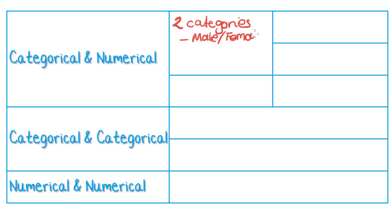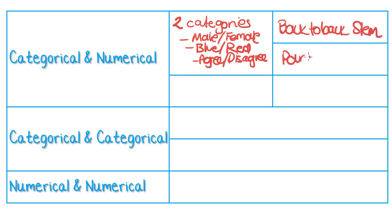Or blue, red, or agree, disagree. When you had two categories as your categorical variables, then the ways of representing that was a back-to-back stem plot or as a parallel box plot.